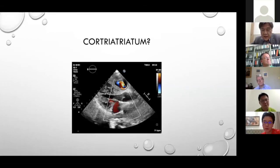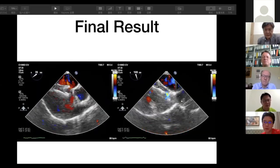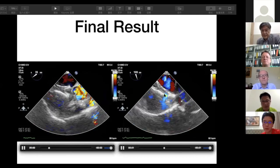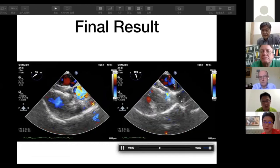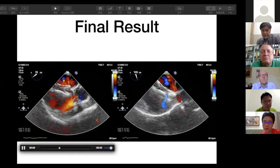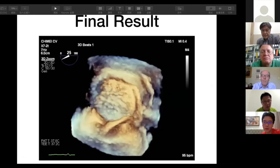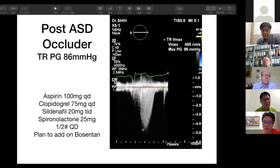Dr. Shi then presented the final TEE. As Professor Wang described, there is a fenestration visible on the occluder device. We can see clearly that the occluder did not obstruct the pulmonary vein flow. There is still a small gap between the occluder and the aorta, but the structure was quite stable. You can still see the inter-atrial cord. This is the transthoracic echo performed several days after the procedure.